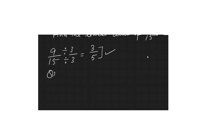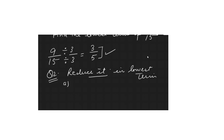Based on this, question 2 on page 74 says: reduce to lowest term. The common factor here is 3: 3×3 = 9 giving the numerator, and 3×9 = 27 giving the denominator. So this is your lowest term or simplest form.